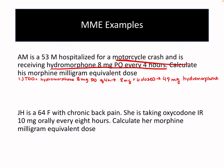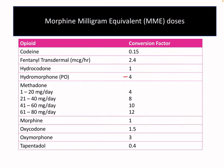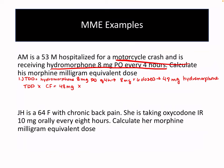Now we can multiply the total daily dose times the conversion factor. Our total daily dose is 48 milligrams, and the conversion factor for hydromorphone is 4. Multiplying those together gives us 192 morphine milliequivalents.